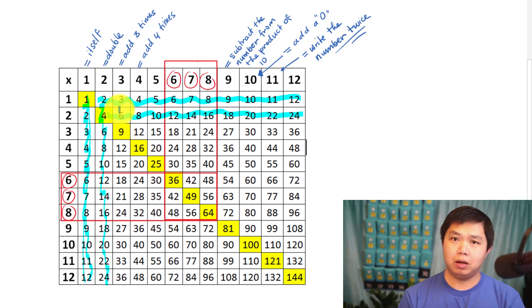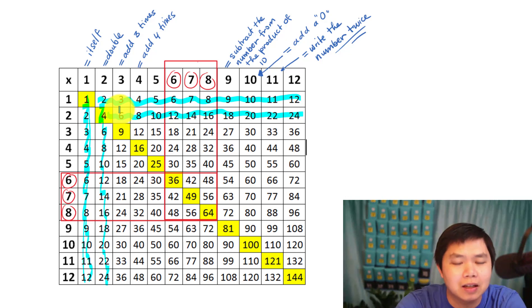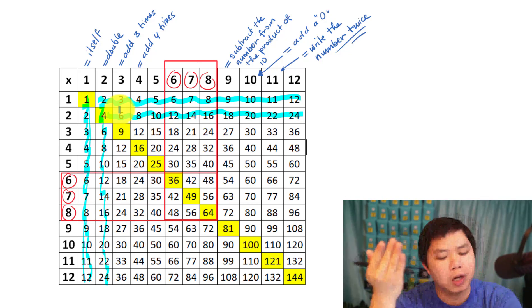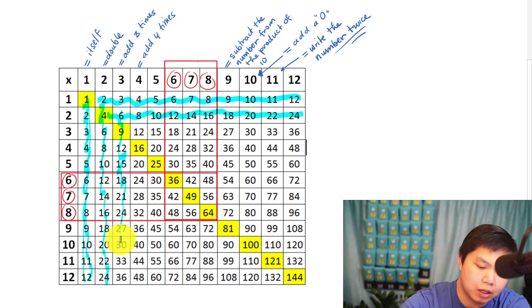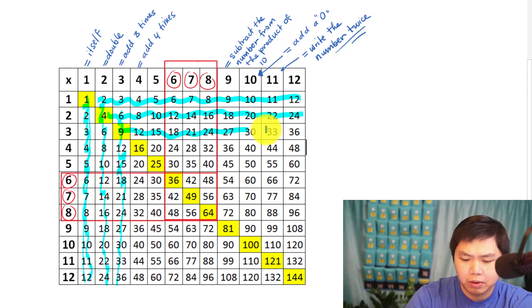So if you can double, of course you can triple. Now we are done with the three, isn't that easy? So now we're done with three this way as well.